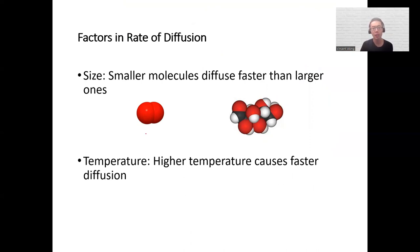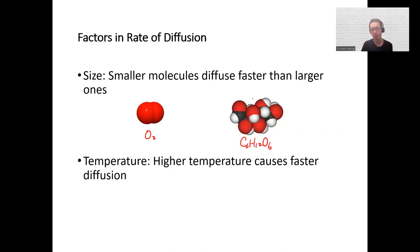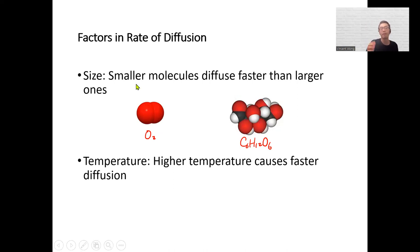For example, we have an O2 molecule — that's really small, only two atoms. Over here we have glucose, which is bigger than O2. So you would expect oxygen to be able to diffuse faster compared to something like glucose.